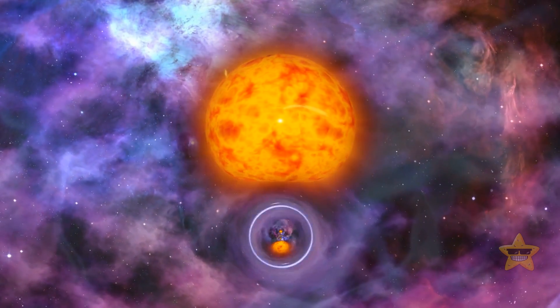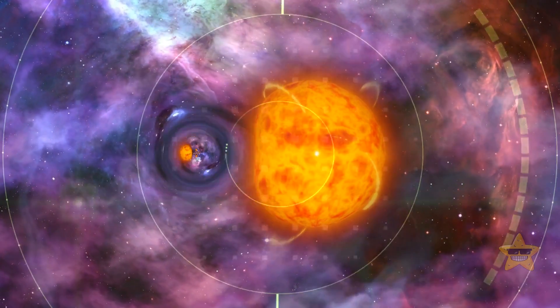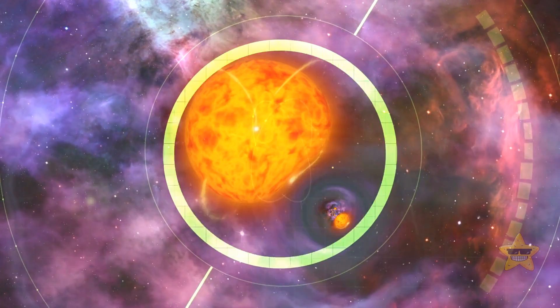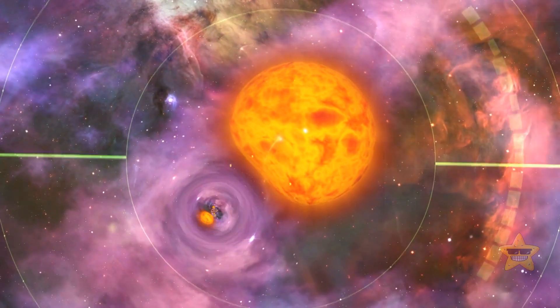When they come in a binary system, they interact with their partner so you can find them easier because of the light around them. That's why finding this solo traveler wasn't easy at all. It just didn't give off any light.